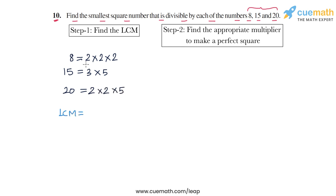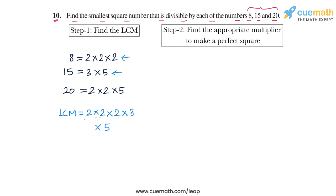For the LCM, we consider each prime factor and find the maximum occurrence of each. The prime factor 2 occurs three times in 8, so the LCM has three 2s. Then 3 occurs once in 15, so the LCM has one 3. And 5 occurs once in 15 and once in 20, so the LCM has one 5.